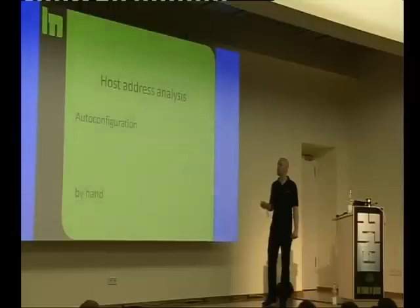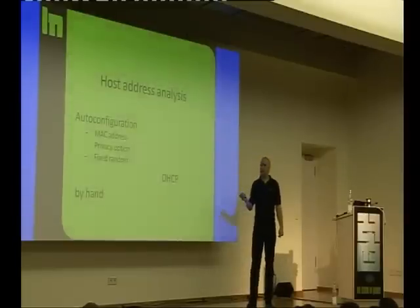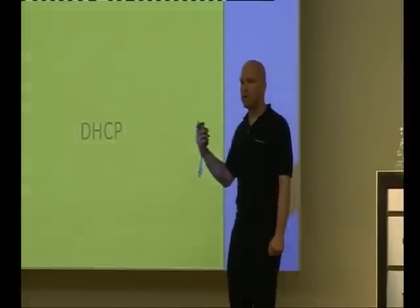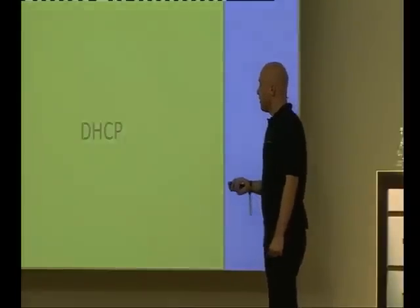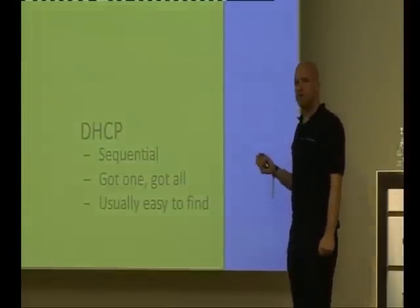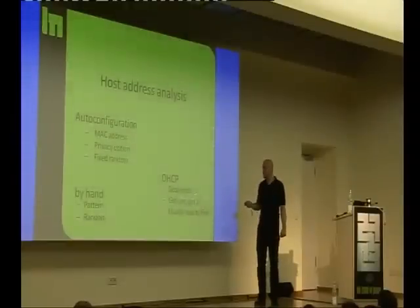Host addresses can be grouped: auto-configuration, hand-configured, DHCP, or hard to distinguish. Auto-configuration uses the MAC address — if a company uses only one vendor, the MAC address space is the same, making it easy to scan. Privacy option means the address is random and regenerated once a week or so — not very useful for scanning. DHCP on IPv6 hands out IP addresses sequentially — if you know the starting point, it's very easy to enumerate the rest; if you find one, you find all.